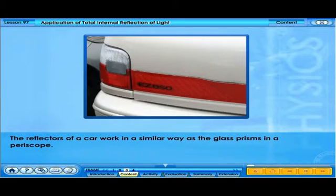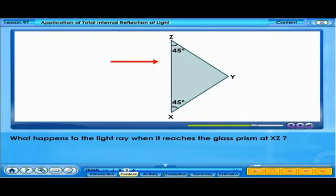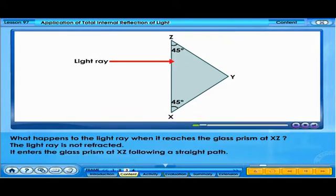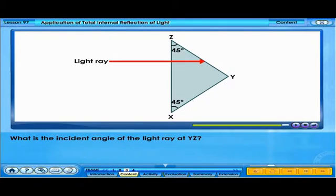The reflectors of a car work in a similar way as the glass prisms in a periscope. What happens to the light ray when it reaches the glass prism at XZ? The light ray is not refracted. It enters the glass prism at XZ following a straight path. What is the incident angle of the light ray at YZ? The incident angle of the light ray at YZ is 45 degrees.